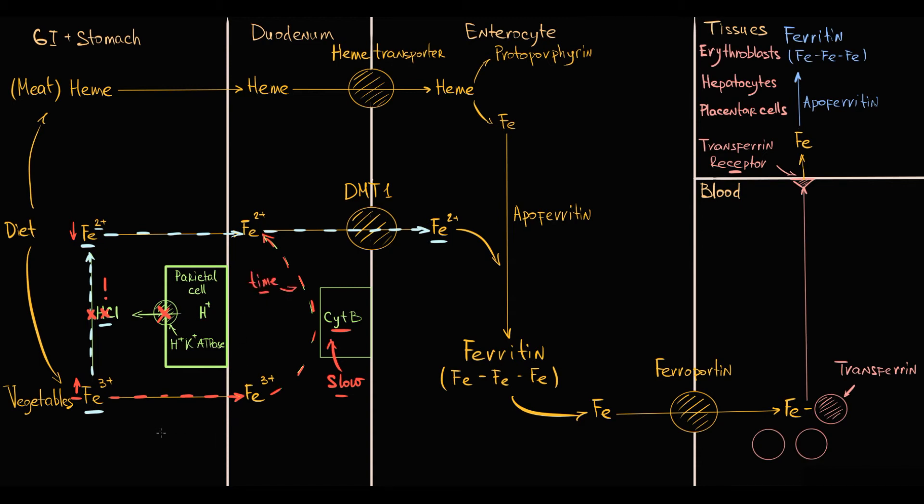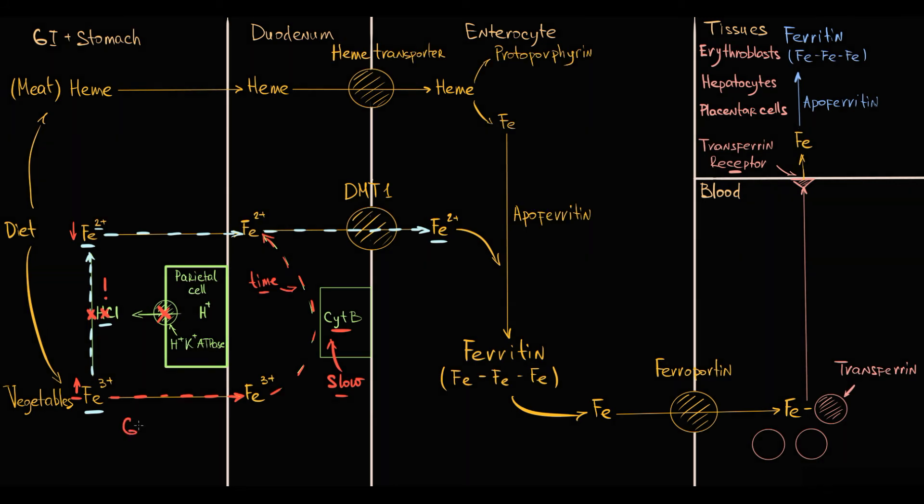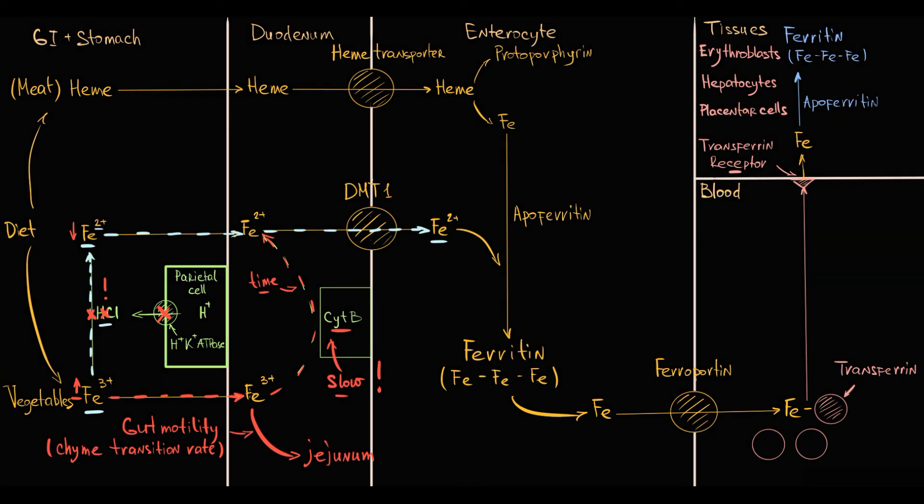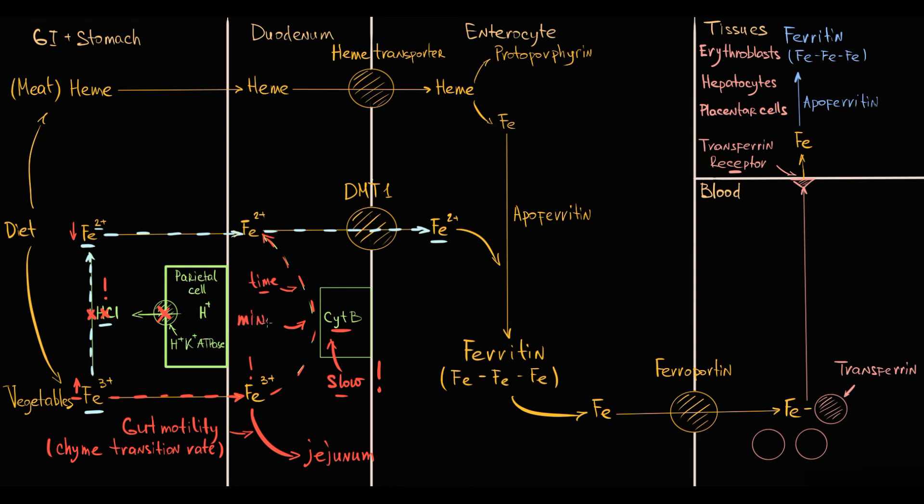So this oxidation plus 3 into plus 2 takes time, and chyme in duodenum stays for a limited period of time. This time is determined by the motility of the gut, because gut contractions propel chyme further into the jejunum. So basically because cytochrome B works slowly, it does not have enough time to oxidize a substantial amount of iron. So in case of massive amount of plus 3 charge iron incoming to the duodenum, only a small portion of iron is oxidized into plus 2 state, and the major portion gets lost with the feces.